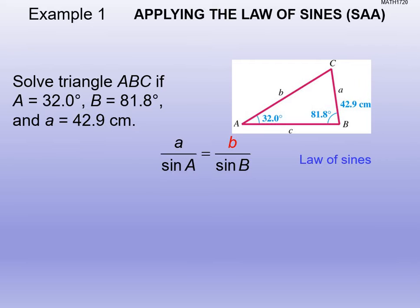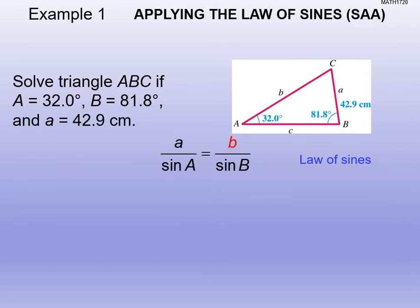We're solving the triangle for all missing pieces. First, find the missing angle: 180 minus 81.8 minus 32 gives you angle C. We use the law of sines involving A's and B's since those are what we have. We have big A, little a, and big B, which lets us find little b. Make sure your calculator is in degree mode.